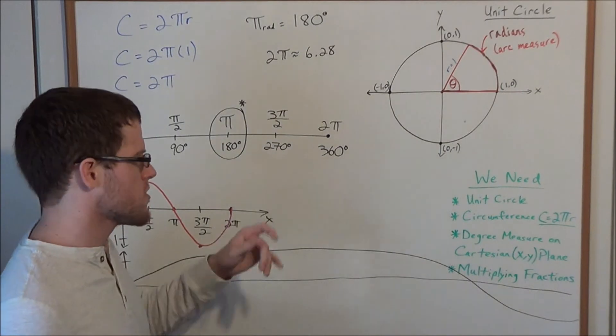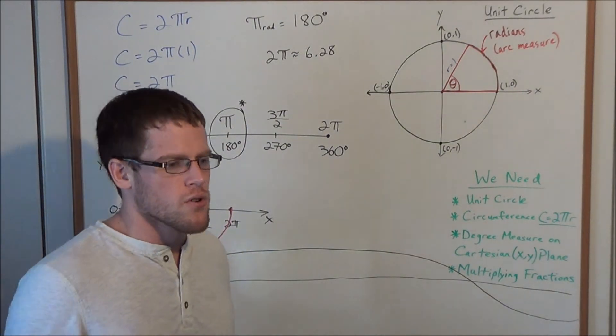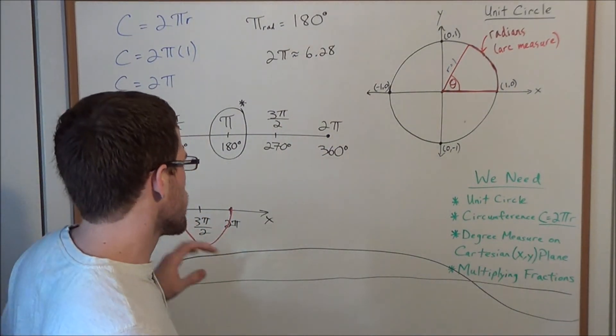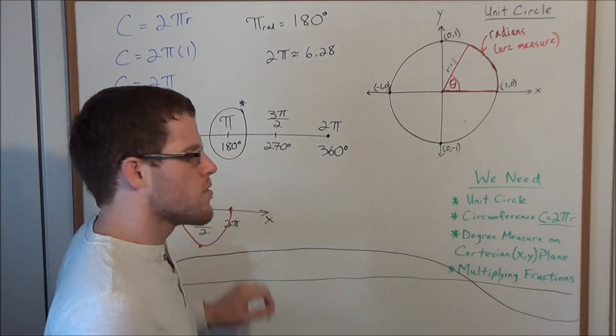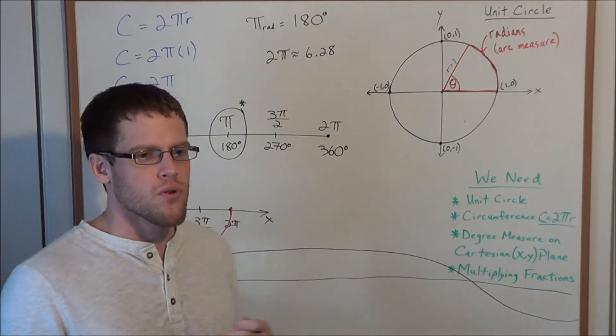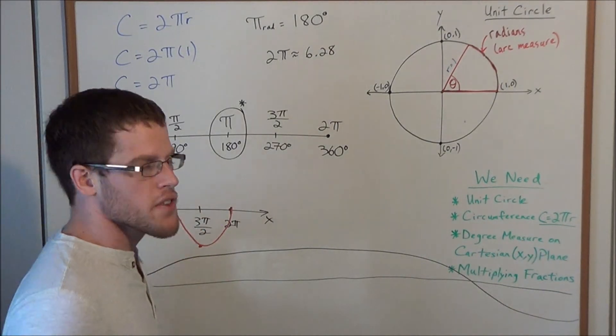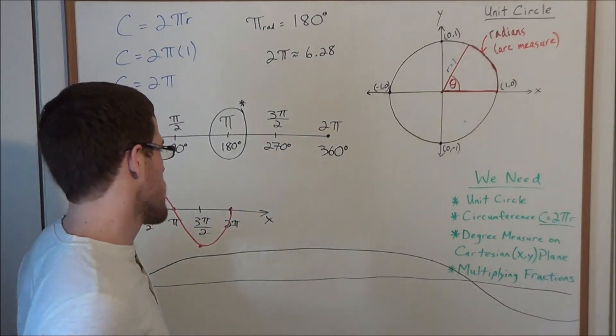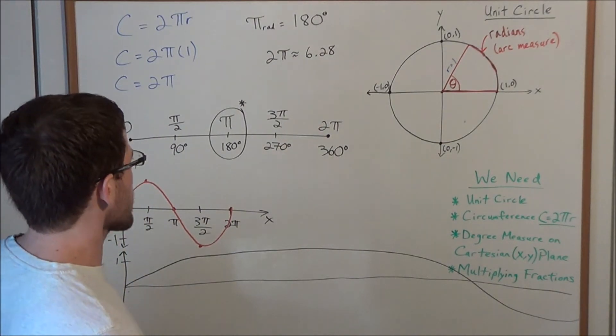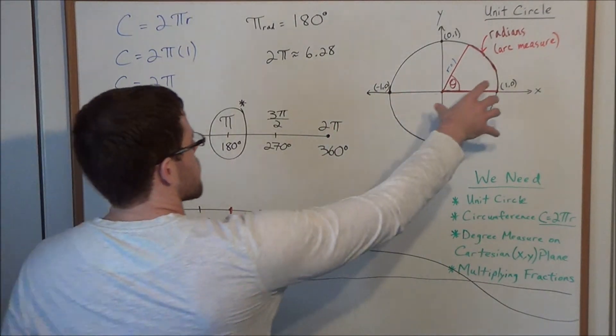And I won't cover this now, but there's also a topic in calculus called Taylor Series where it really helps to have radian measure because it just makes all the algebra way simpler. So radians simplifies everything that we've learned so far with angular measure.